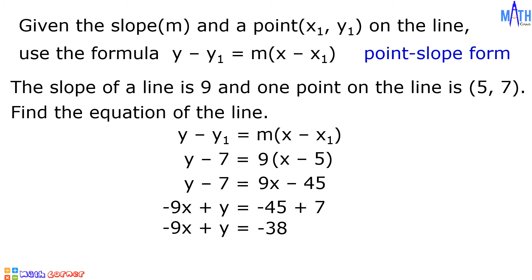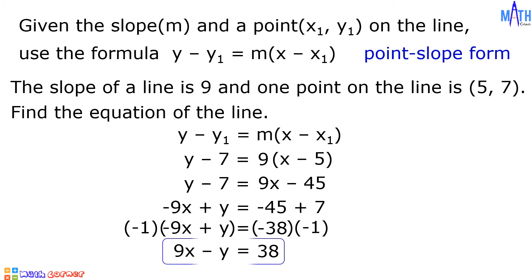To make the leading coefficient positive, let us multiply negative 1 on both sides of the equation. Negative 1 multiplied by negative 9x plus y gives 9x minus y, and negative 38 multiplied by negative 1 is positive 38. This is the equation of the line with a slope of 9 and passing through the point (5, 7).